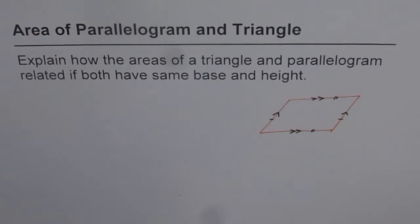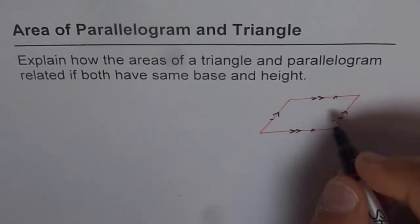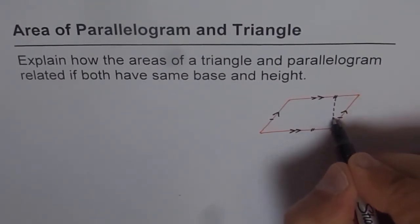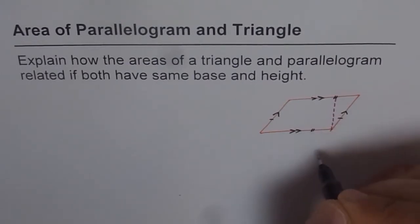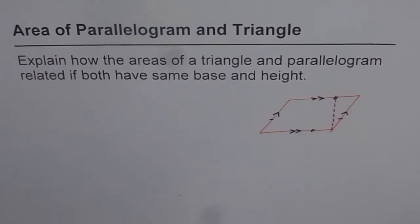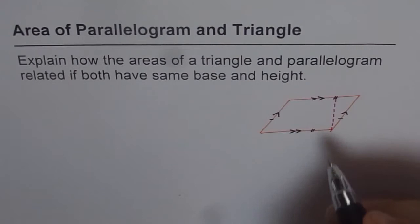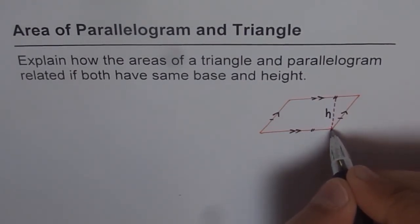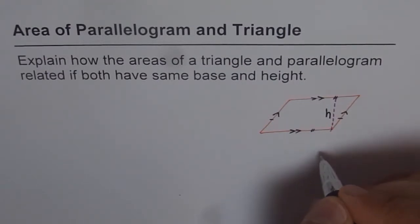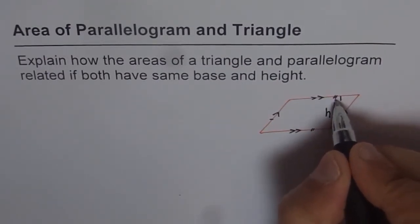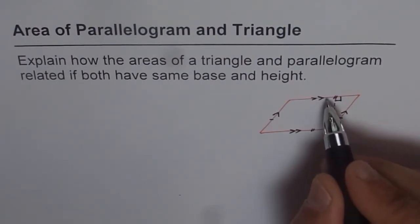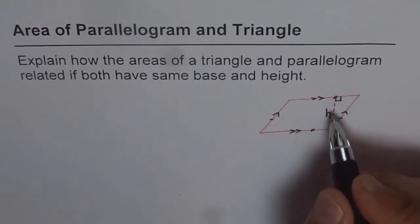Area of a parallelogram is base times height. The height is found by drawing a perpendicular from one side — that becomes the height, which is the perpendicular or the shortest distance between opposite sides. So that line is perpendicular and therefore it is the shortest length between any two opposite sides.